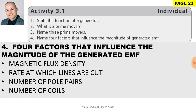Name four factors that influence the magnitude of a generated EMF. It is dependent upon the strength of the magnetic flux, the rate at which the lines are cut, the number of pole pairs, and the number of coils.